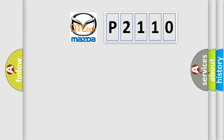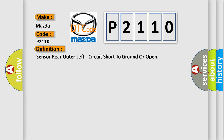The number itself does not make sense to us if we cannot assign information about what it actually expresses. So, what does the diagnostic trouble code P2110 interpret specifically for Mazda car manufacturers? The basic definition is: Sensor rear outer left, circuit short to ground or open. And now this is a short description of this DTC code.